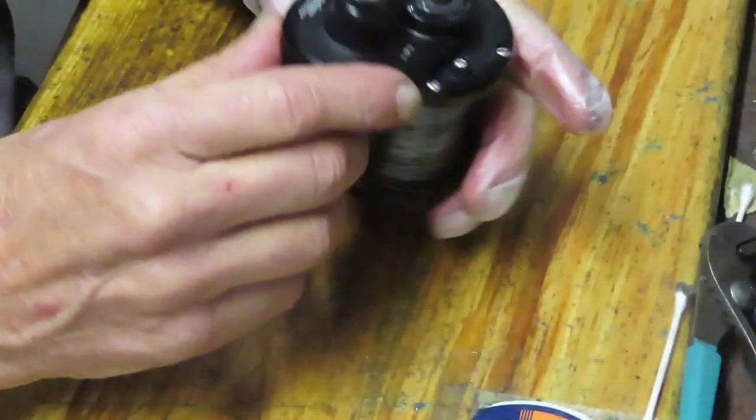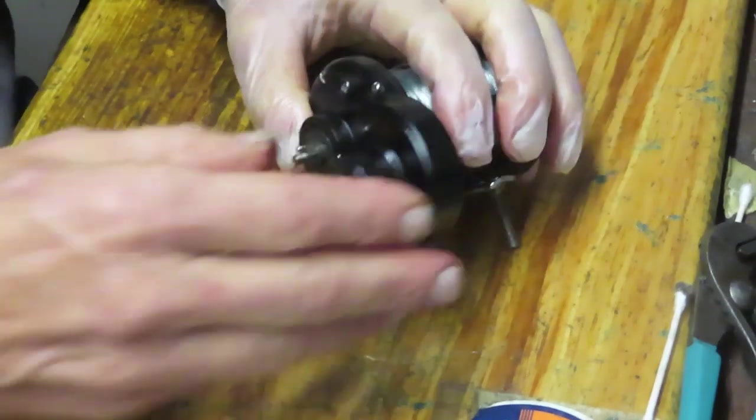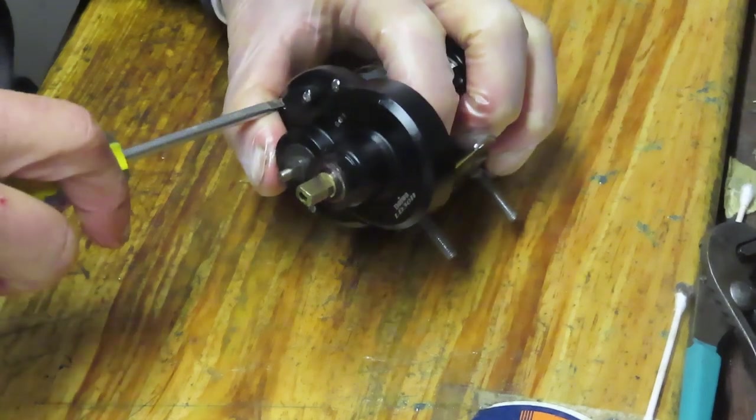One, two, three, four screws there. None in the back. And they look to be flat bladed screws. So we're going to take these out.